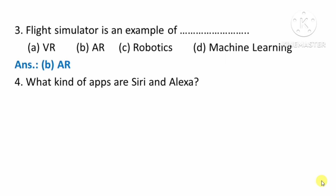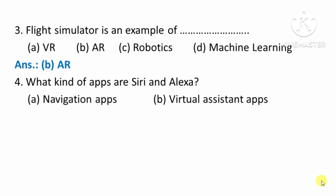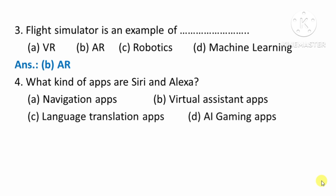Next question: What kind of apps are Siri and Alexa? Options: A. Navigation apps, B. Virtual Assistant apps, C. Language Translation apps, D. AI gaming apps. The right answer is option B — Virtual Assistant apps.